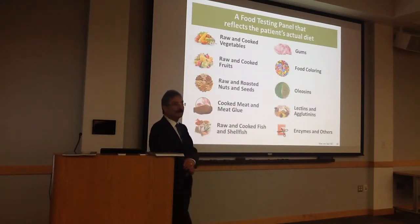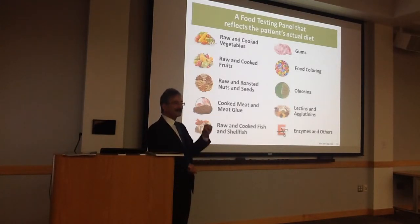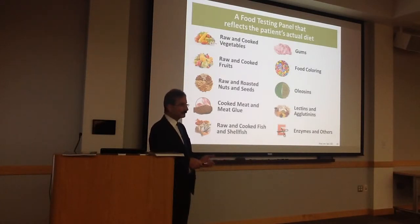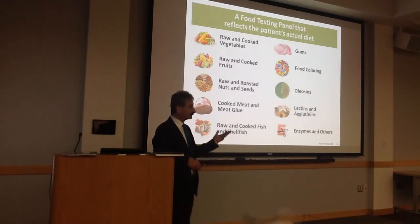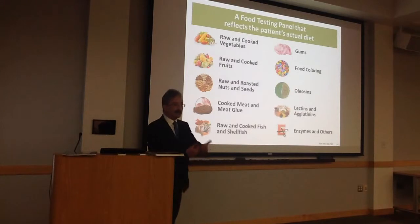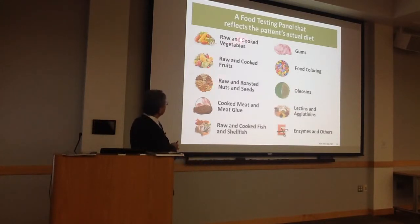Therefore, if we eat raw food, we have to measure antibodies against proteins of raw food. If we eat cooked food — for example, beans — we don't eat them raw. If we eat raw beans, we'll develop diarrhea. So we have to measure antibodies against cooked beans, not raw beans. That's the message. So the panel covers raw and cooked vegetables, raw and cooked fruits, raw and roasted nuts and seeds.